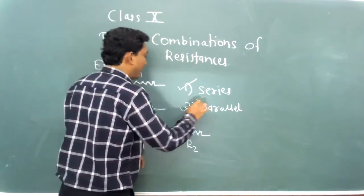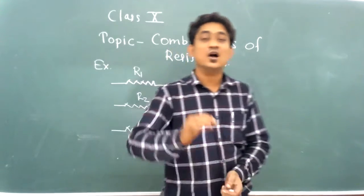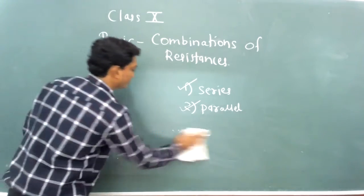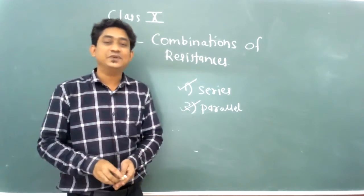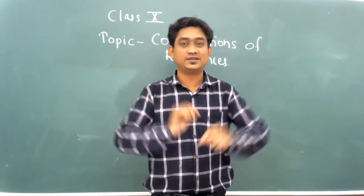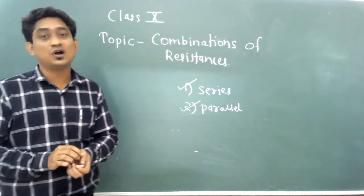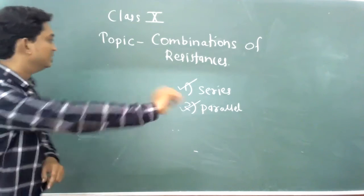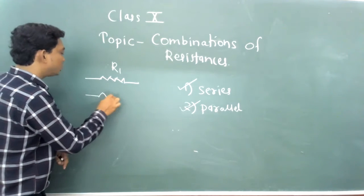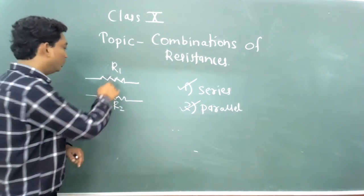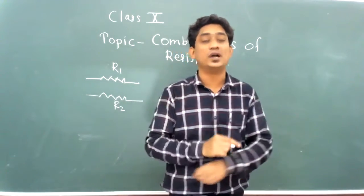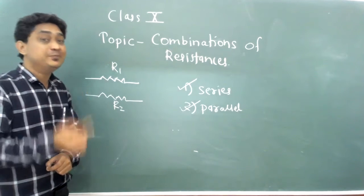Now let's look at the parallel combination. How do we connect two or more resistances in a parallel combination? The definition of parallel combination: whenever two or more resistances are connected at a common point, such a type of combination is called a parallel combination of resistances.